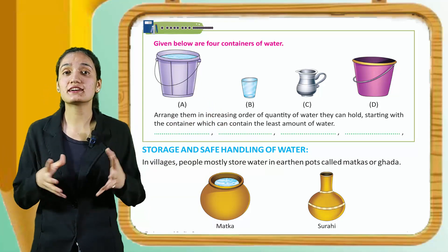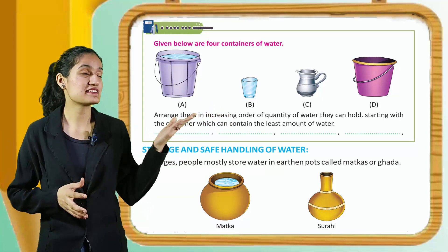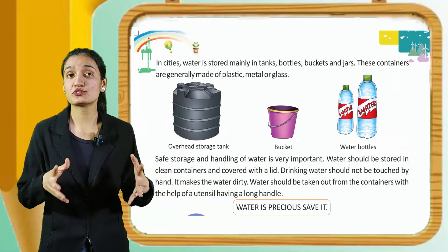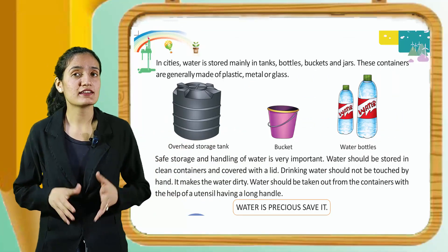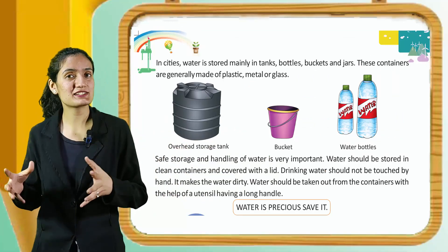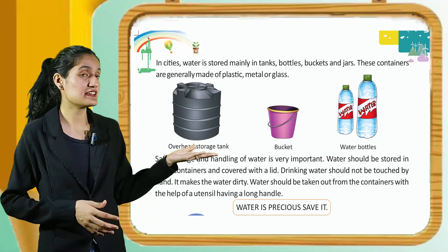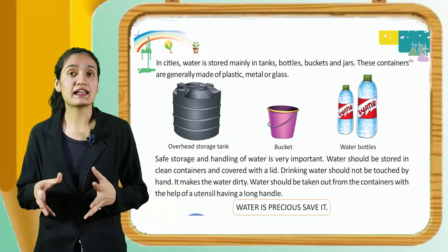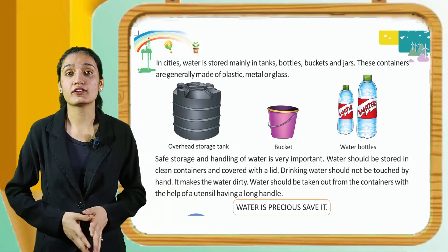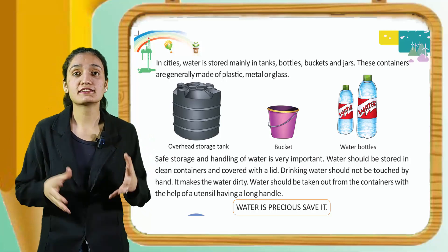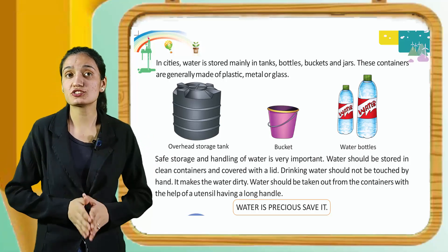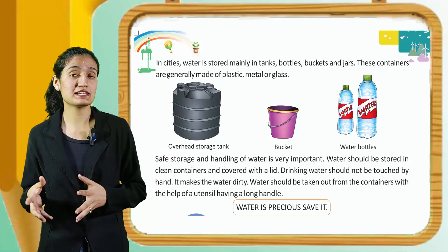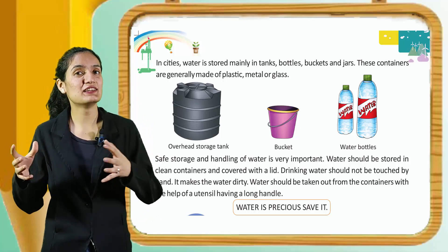Storage and safe handling of water: in villages, people mostly store water in earthen pots called matkas or suraahi. In cities, water is stored mainly in tanks, bottles, buckets, and jars — generally made of plastic, metal, or glass. Safe storage and handling of water is very important. Water should be stored in clean containers and covered with a lid. Drinking water should not be touched by hand as it can make the water dirty. Water should be taken out from the container with the help of utensils having a long handle.